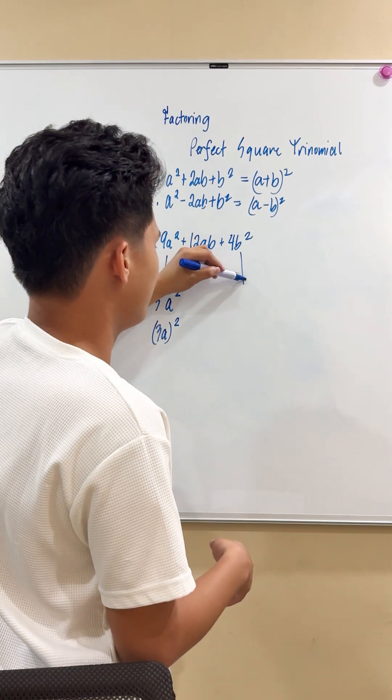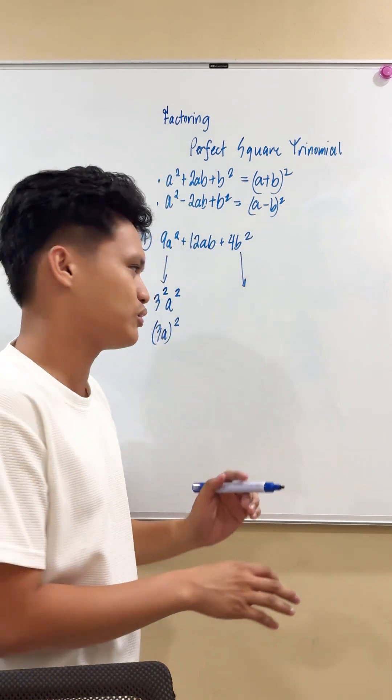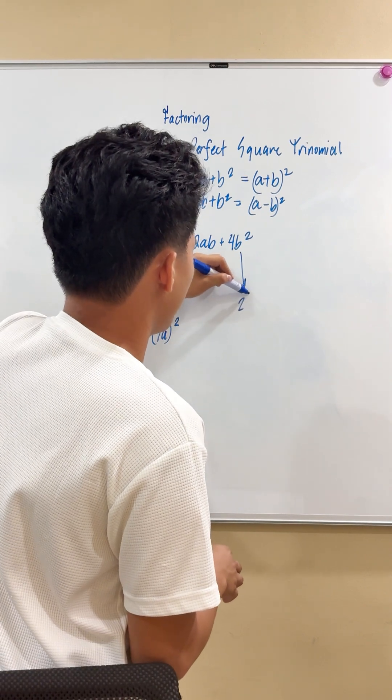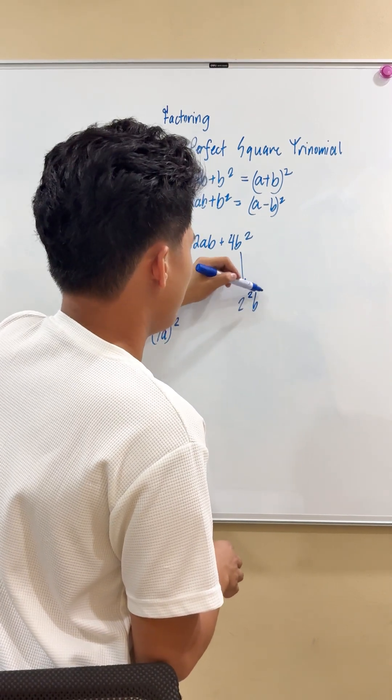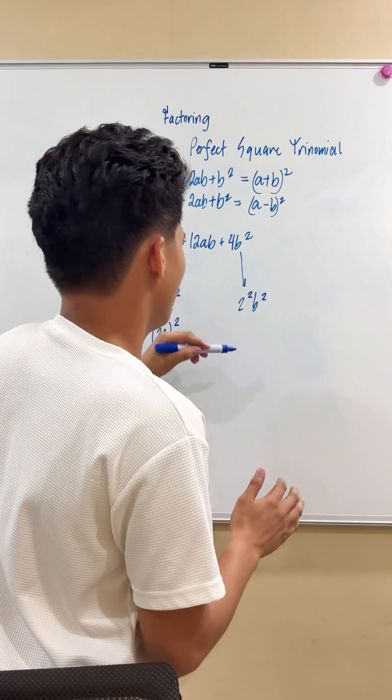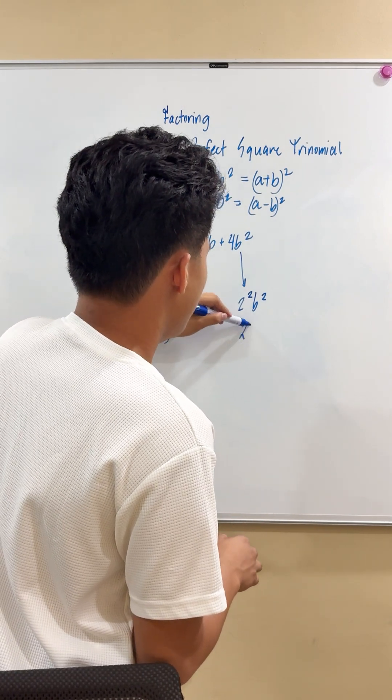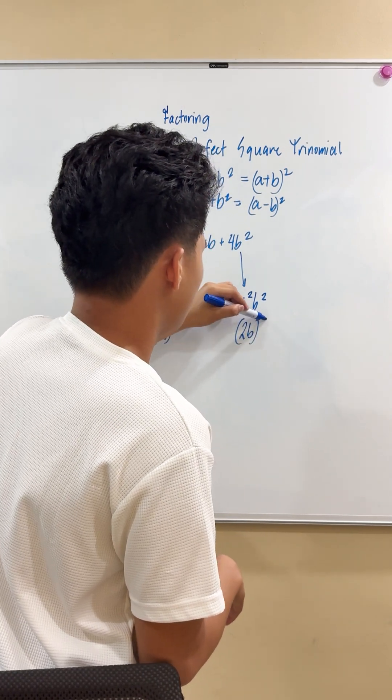What about 4b squared? We know for the fact that 4 is actually expressed as 2 squared. And then b squared will remain as b squared. Again, by the laws of exponent, we can write this one as 2b squared.